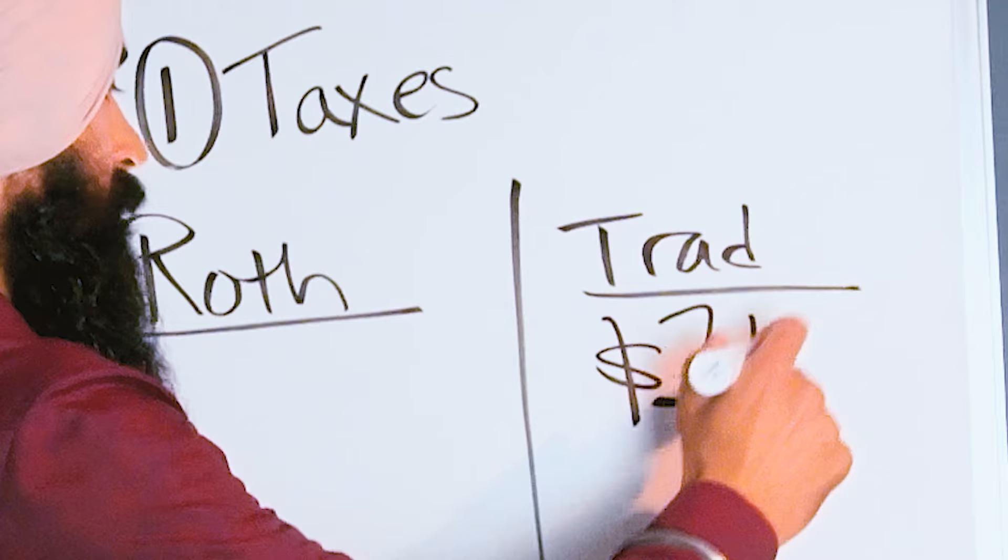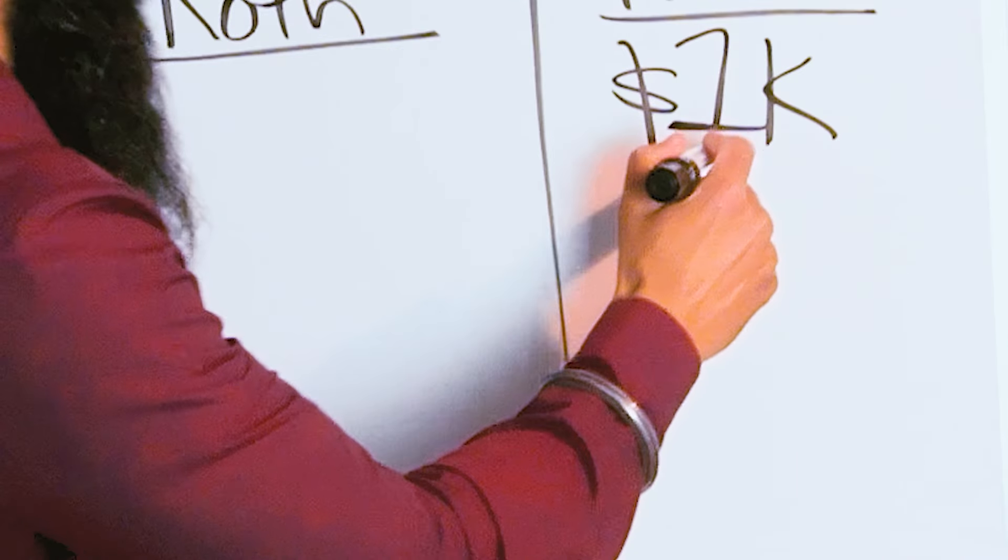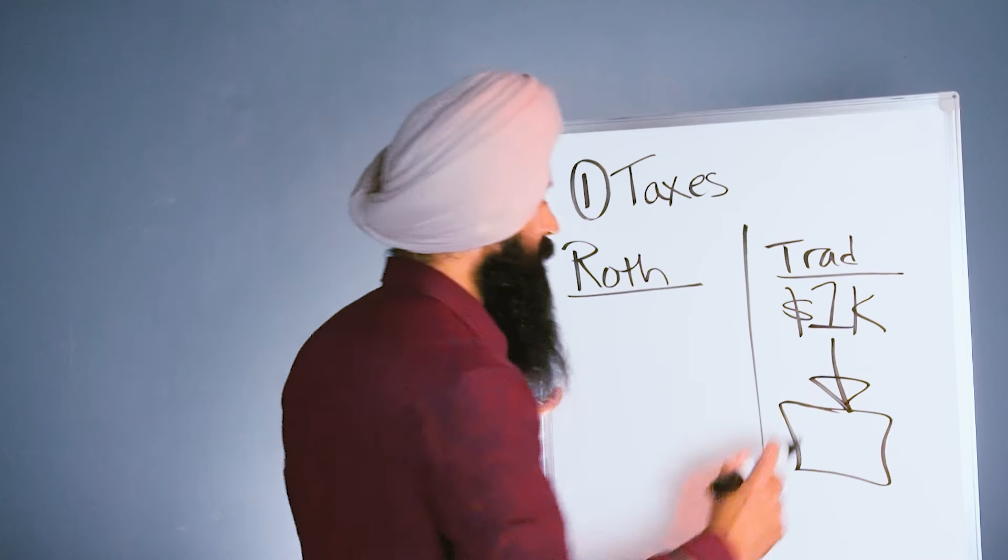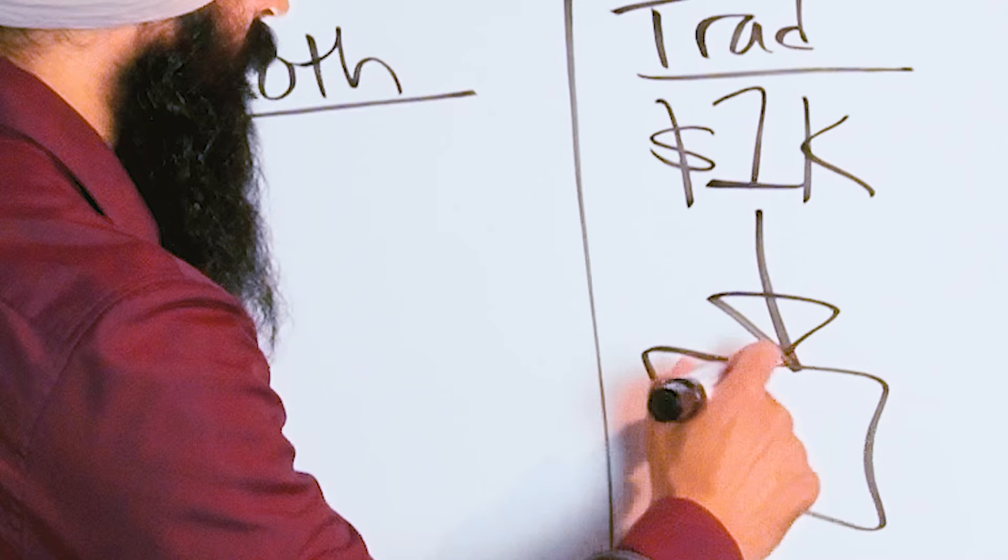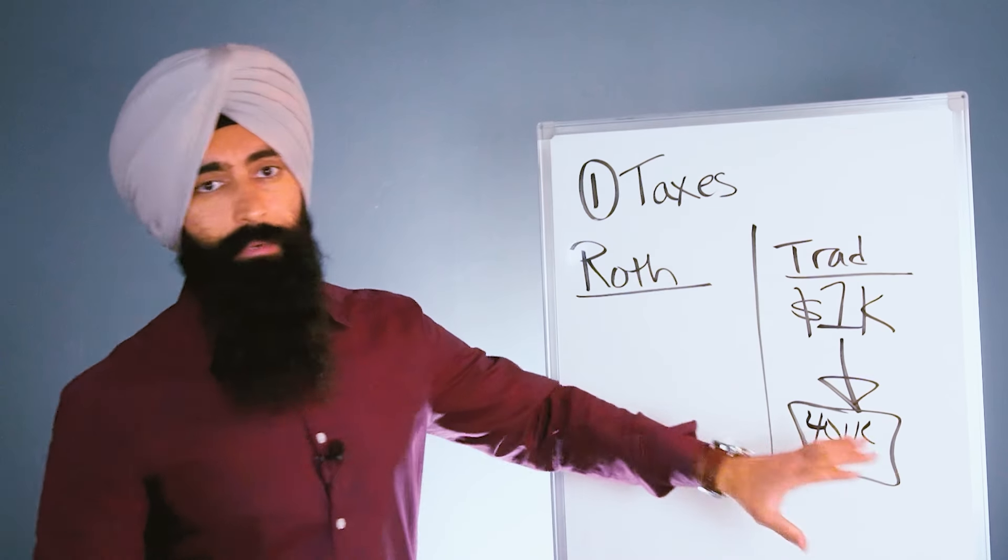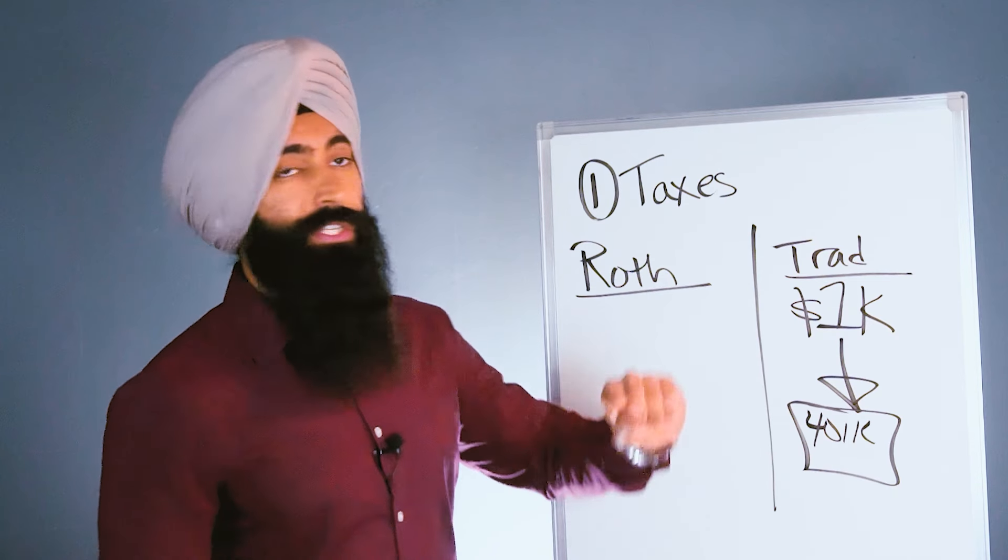If you make $1,000 from your job and put this all into a 401k, that means all $1,000 gets to go into your 401k. The money then grows in your 401k for as long as it's sitting there, and when it comes time for you to retire, hopefully this $1,000 will grow to say $10,000.